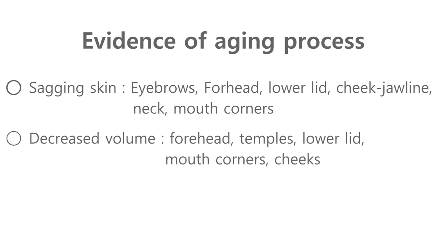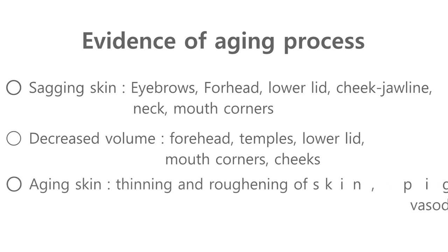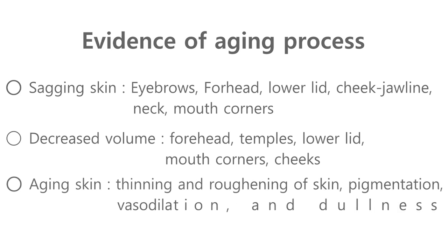Since volume is decreased, the forehead becomes flatter and depression occurs on temple areas and lower lid. Then nasolabial folds appear around the mouth and cheeks become depressed as well. Then the skin starts to age. As people age, skin becomes thinner with the aging process. Phenomena such as roughness, pigmentation, vasodilation and overall darkening of skin appear.